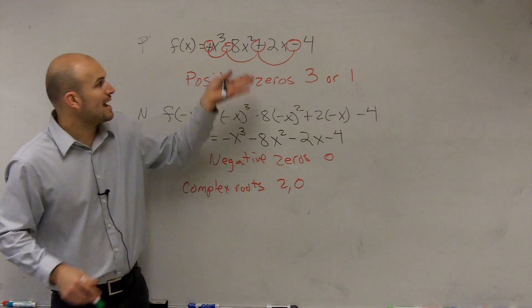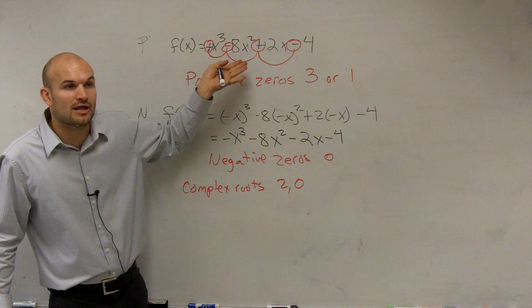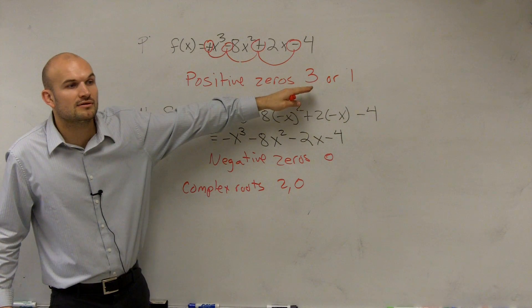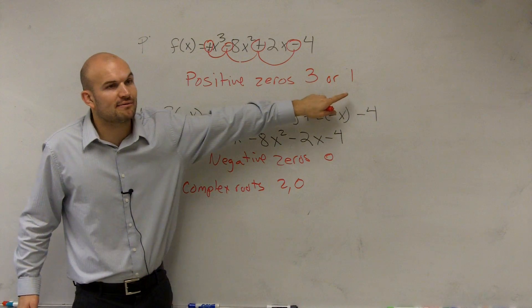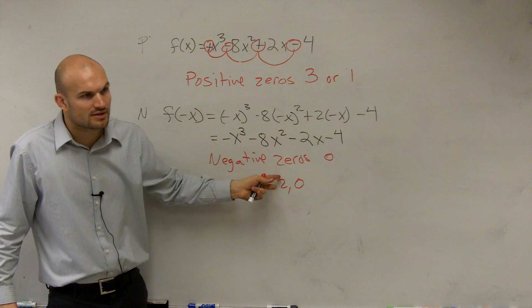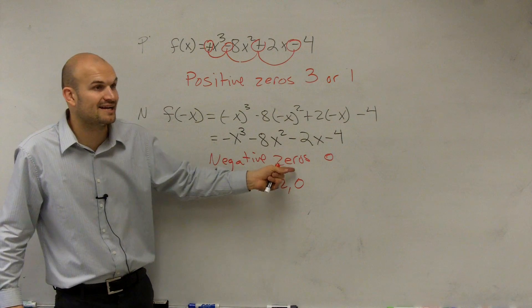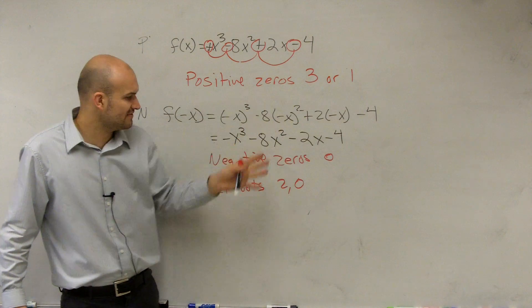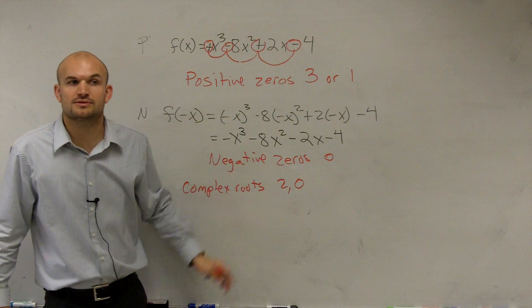Because think about it, again, you have to have three zeros for your polynomial. All three of them could be positive, right? Or one of them could be positive. Well, if one of them's positive, could the other two be negative? No, because there's no negative zeros. So if one is positive, then you could have two complex roots, OK?